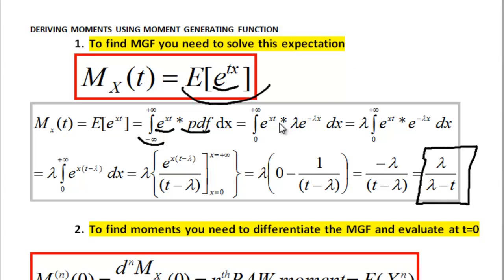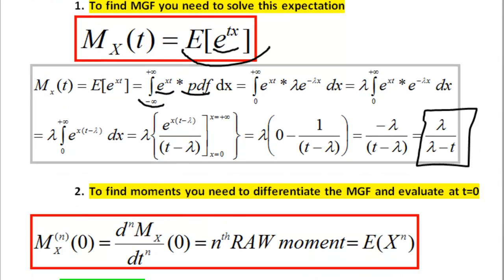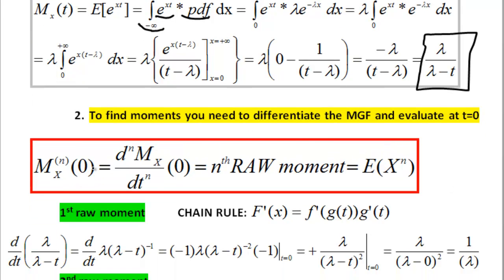We didn't go through all this pain in vain because it turns out that once you have the moment generating function and when you differentiate it with respect to little t and evaluate at zero, then you will recover raw moments. This is fantastic news because the only other option we had for deriving moments was by solving expectations, and expectations involve integration.